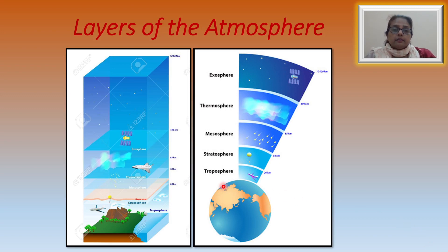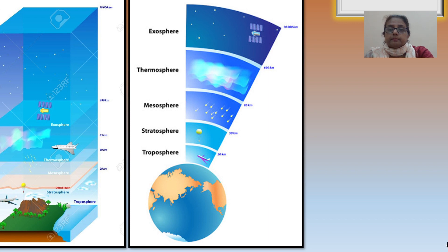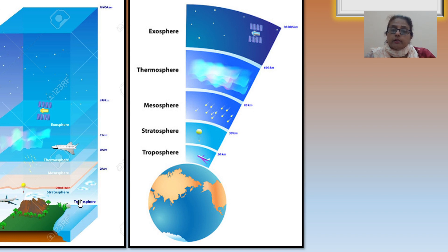The five layers are: the troposphere, the stratosphere, the mesosphere, the thermosphere, and the exosphere. Let us learn about the troposphere, which is the lowest layer of the atmosphere, closest to the surface of the Earth.